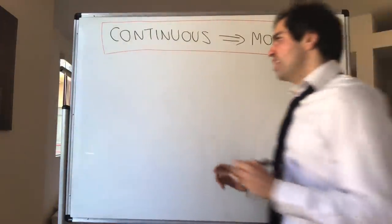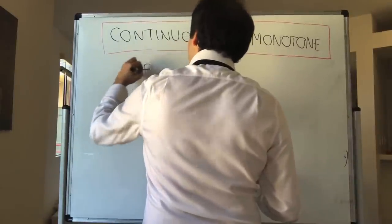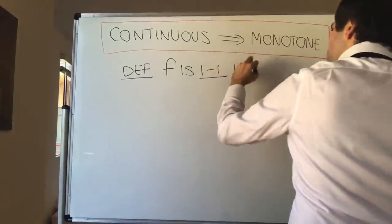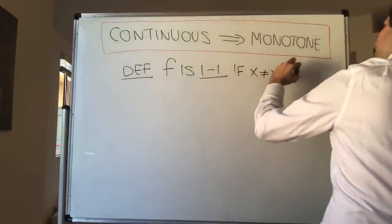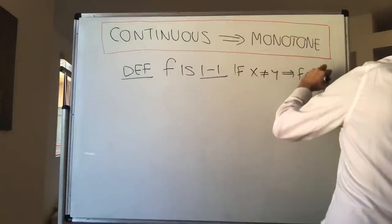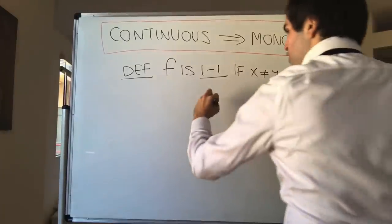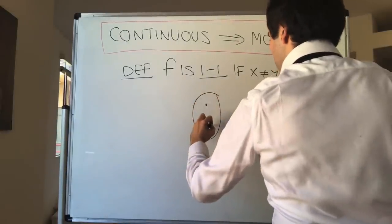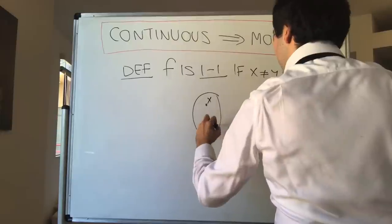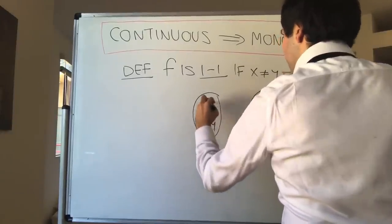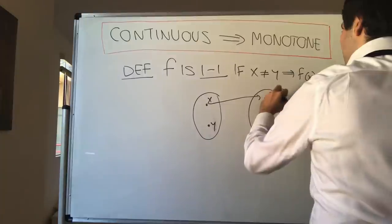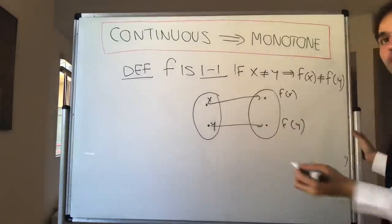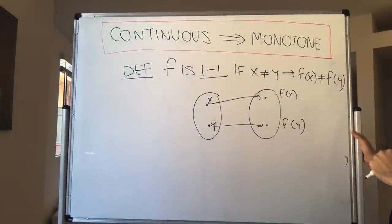For this, let me set up some terminology. Remember, one-to-one means the following: f is one-to-one if two different inputs give you two different outputs. In terms of airplanes, it just means that if you start at two different airports x and y, then you end up at two different airports, f of x and f of y. In other words, there's no clash happening.